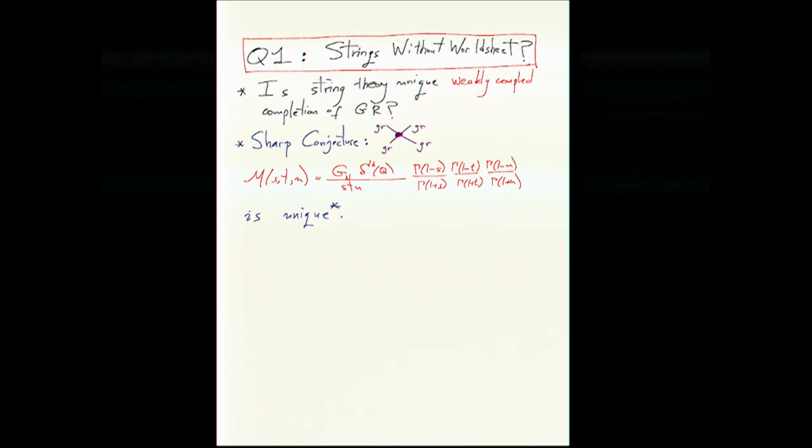So what I mean by that is, saying that it's weakly coupled means that there's some quote unquote tree approximation to the two to two scattering amplitude. That tree approximation should only have poles. It should have the miraculous feature that on the residue of any pole, you can express it as a sum over the exchange of spin s particles with positive coefficients.